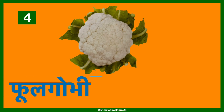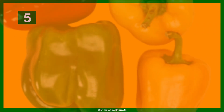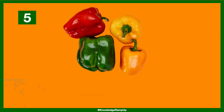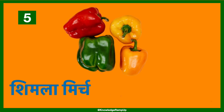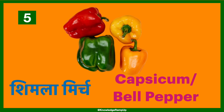Fool gobi is cauliflower in English. Shimla Mirch has two names in English: capsicum, and it's also called bell pepper.